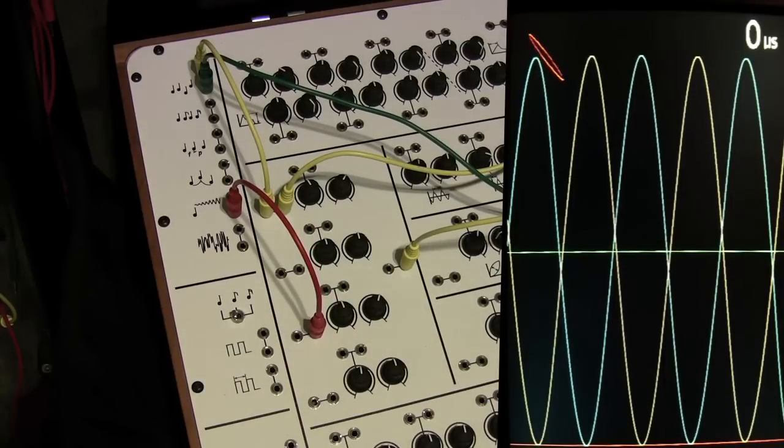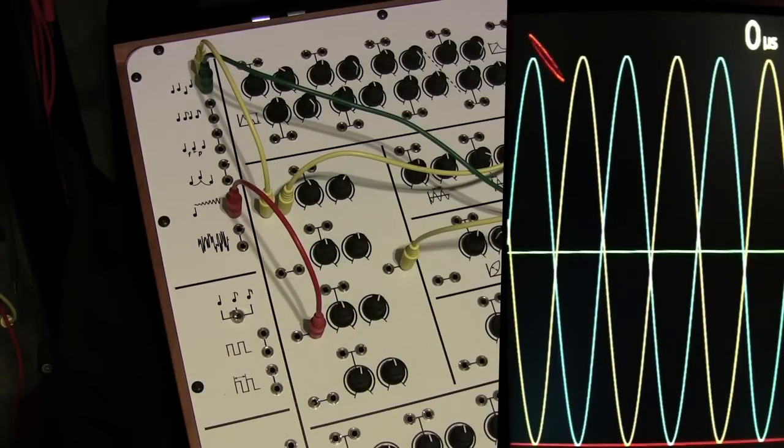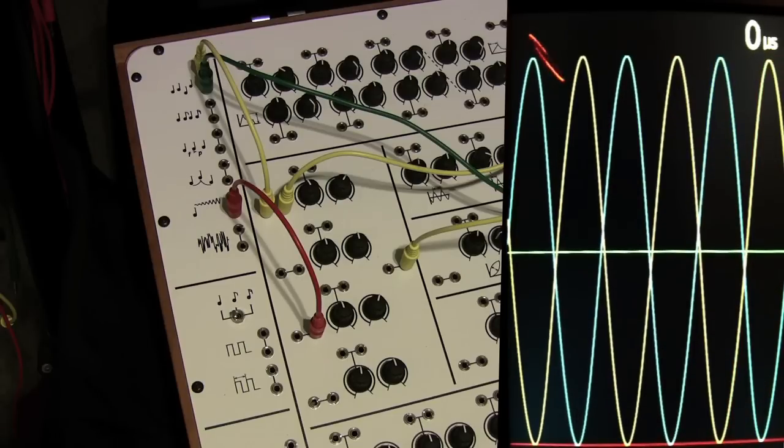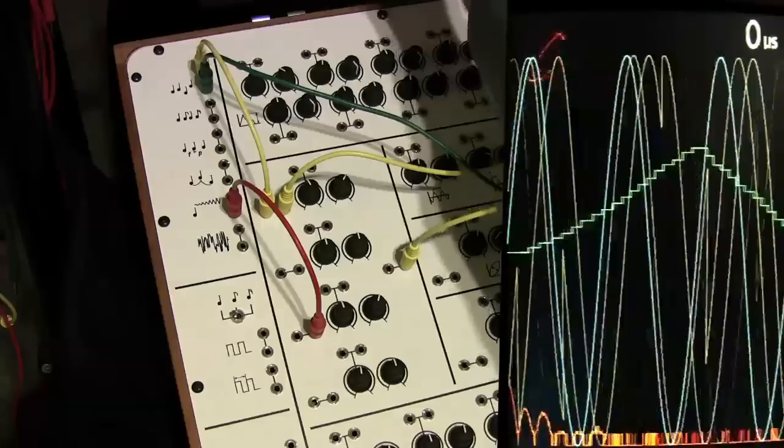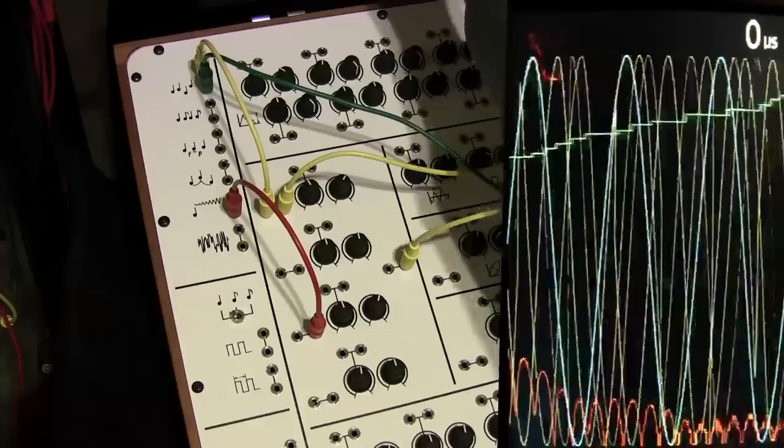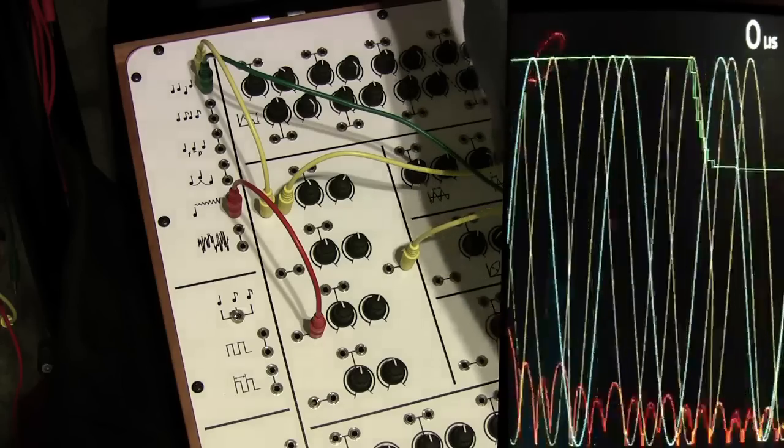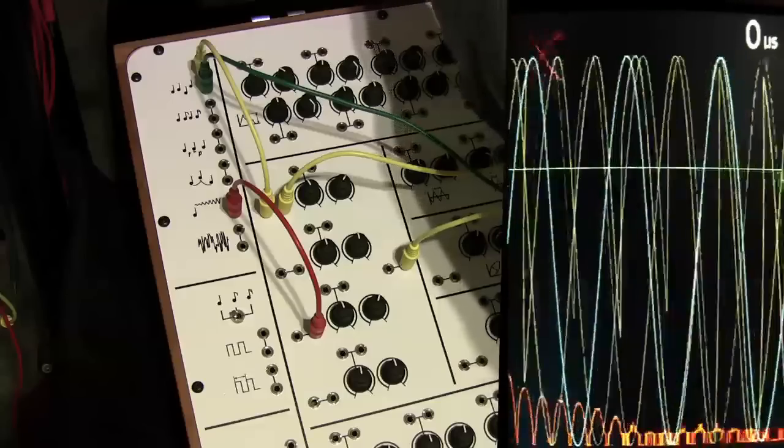So here we have two oscillators operating in phase and tracking each other in frequency as we play the keyboard. As I increase the value on the mod wheel I can add an offset to the control voltage of one of the oscillators and if I hold that at a constant value the two frequencies remain at a steady difference.